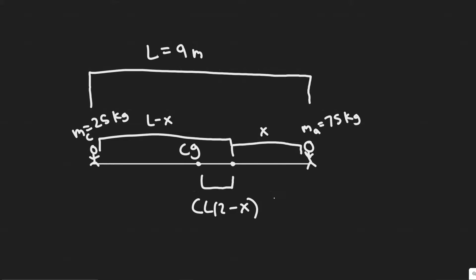In this problem, a 75 kilogram adult sits at one end of a 9 meter long board, and a 25 kilogram child sits on the other end. Part A asks where the pivot should be placed so that the board is balanced, ignoring the board's mass. Part B asks to find the pivot point if the board is uniform and has a mass of 15 kilograms.